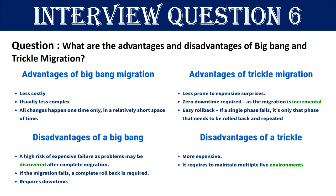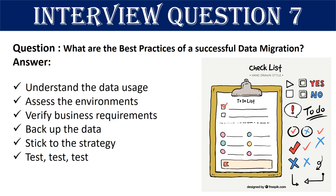Disadvantages of big bang: high risk of expensive failure as problems may be discovered after complete migration; if the migration fails, a complete rollback is required; and it requires downtime. Disadvantages of trickle approach: more expensive and requires maintaining multiple live environments.